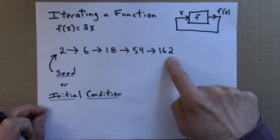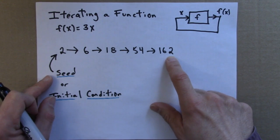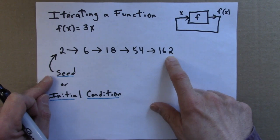The sequence of numbers we get as a result of iterating our seed is known as an itinerary or an orbit.